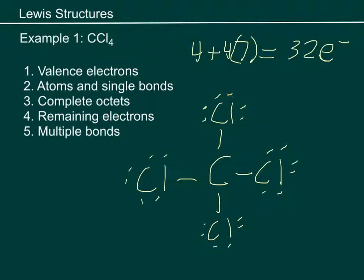Chlorines all have eight around them. This carbon has 2, 4, 6, 8 — great, we're all set. We don't need to worry about steps four and five. This right here is the Lewis structure of carbon tetrachloride. We'll be looking in the next video at how to deal with things such as formal charge and more complex situations, but for right now this is pretty straightforward.